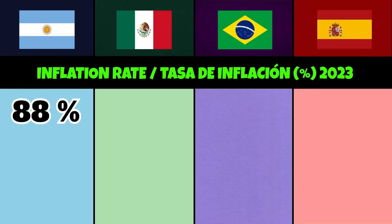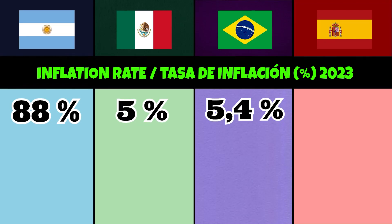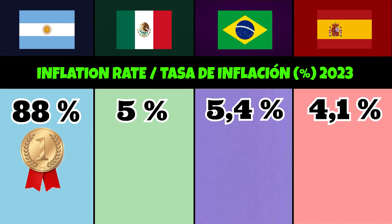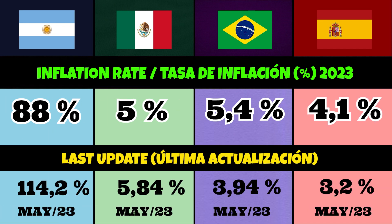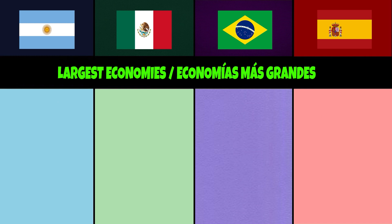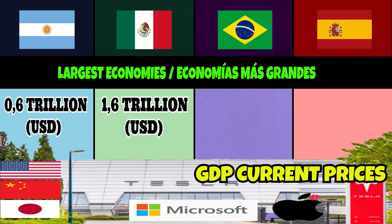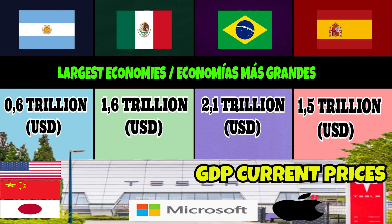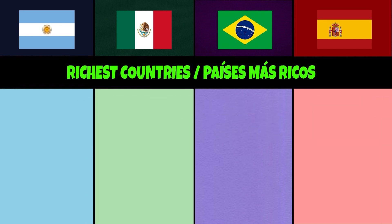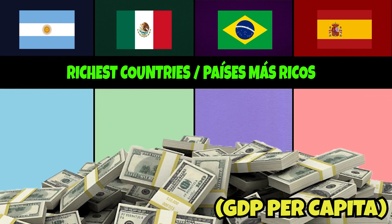Inflation rate: 88%, 5%, 5.4%, 4.1%. Largest economy GDP current prices: 0.6 trillion dollars, 1.6 trillion dollars, 2.1 trillion dollars, 1.5 trillion dollars — richest countries by GDP.